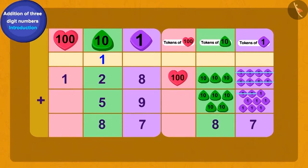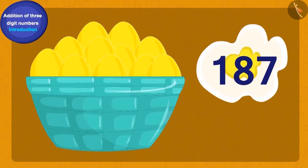Now what shall we do in the end? Yes, we would write one as the total number of tokens of hundred. Oh, wow! Baban now had a total of one hundred and eighty-seven gold eggs.